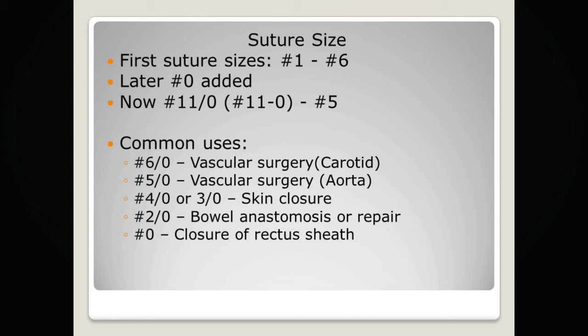Different suture types are required to hold different tissues. As you can see from the slide, common uses of different sizes extend from 6-0, normally used in vascular surgery for a carotid, to 5-0 for an aortic graft, then 4-0 or 3-0 for skin closure. Tissue requiring more strength, such as bowel anastomosis, uses a 2-0, and closure of the rectus sheath requires a good thick strong suture such as a number 0.